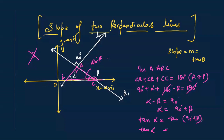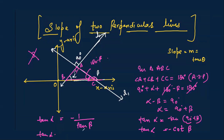We know that tan(90 + beta) falls in the second quadrant. Using the 90-plus conversion rule, tan converts to cot, and since tangent is negative in the second quadrant, tan(90 + beta) equals minus cot(beta). Since cot and tan are reciprocals of each other, this becomes minus 1 over tan(beta). Cross-multiplying gives tan(alpha) times tan(beta) equals minus 1.